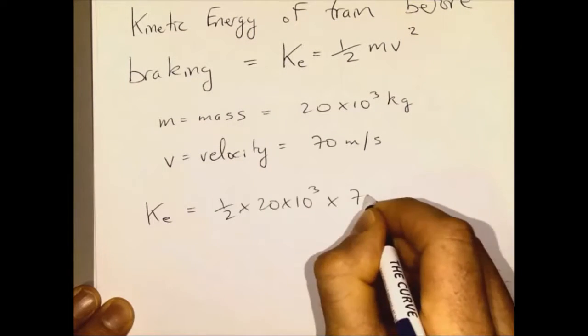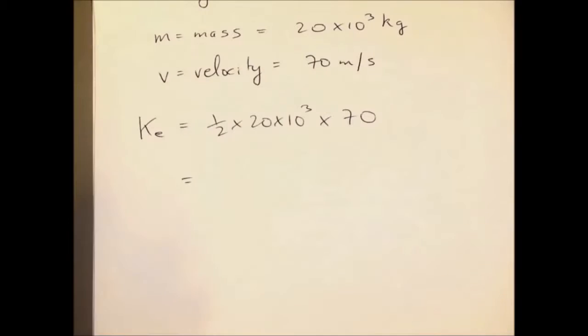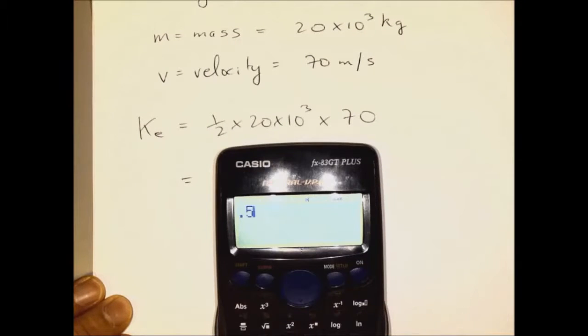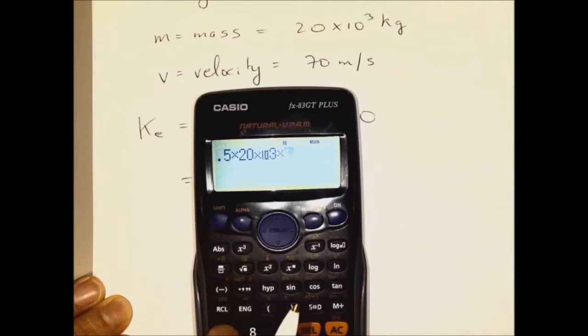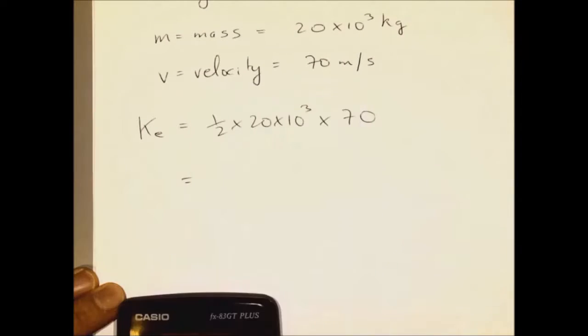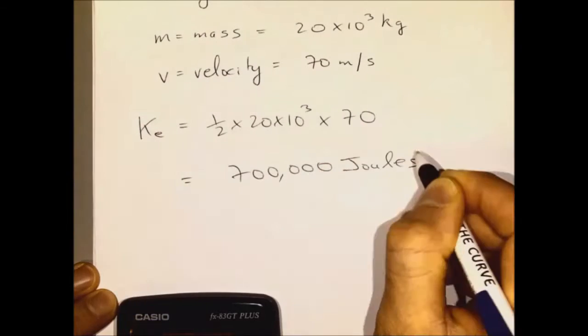We work out the total kinetic energy and that's going to be the same answer. That will be the value of the heat dissipated by the brakes because the energy went nowhere else. So the answer is going to be 700,000 joules.